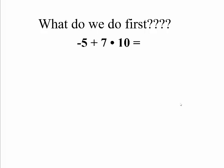We're going to work with this expression: negative 5 plus 7 times 10. What do we do first? Do we do the addition first, or the multiplication first? Let's try going left to right — doing negative 5 plus 7 first. Negative 5 plus 7 gets me 2. Now we do 2 times 10, and that gets me 20.